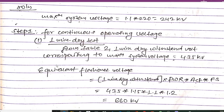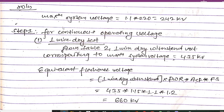The maximum system voltage will be 1.1 × 220 kilovolt. So for maximum system voltage we multiply by 1.1, giving us 242 kilovolt.